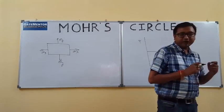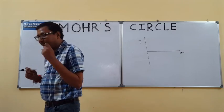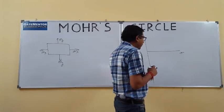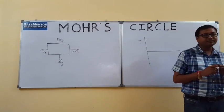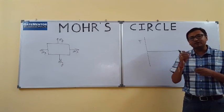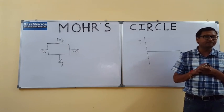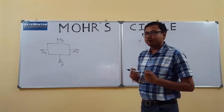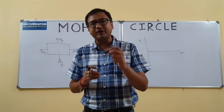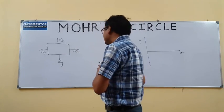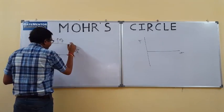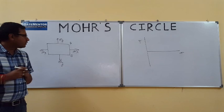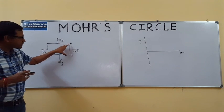Every point on the periphery of the Mohr's circle represents a stress condition on a particular plane. Now, what is the stress condition on plane AB?